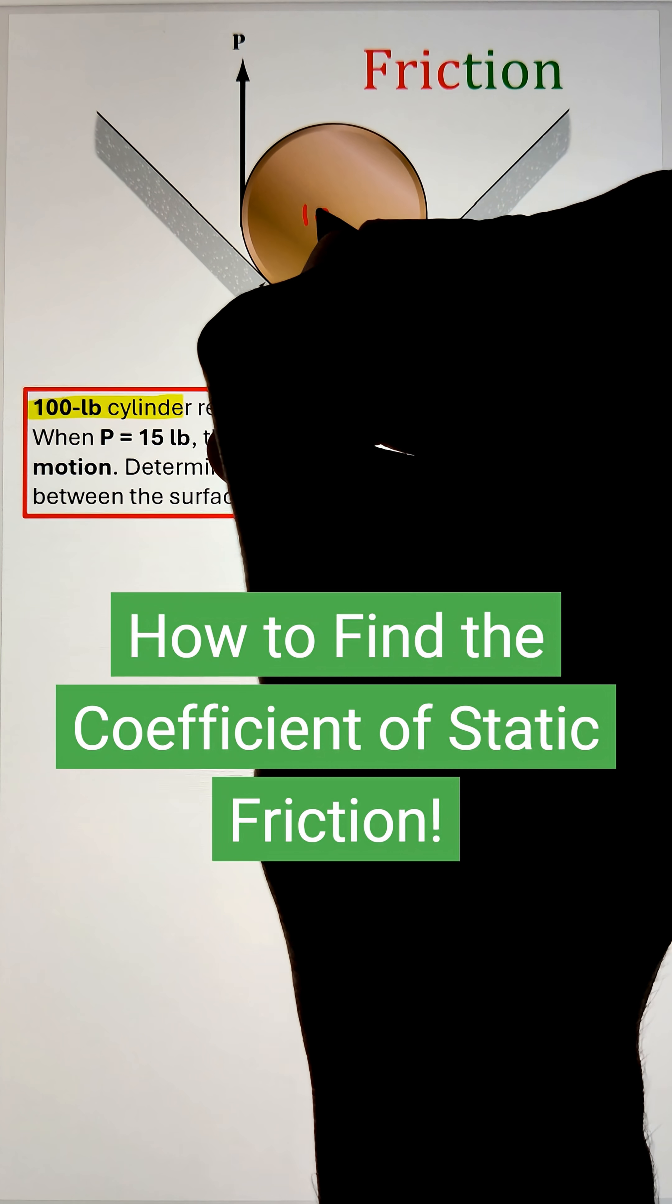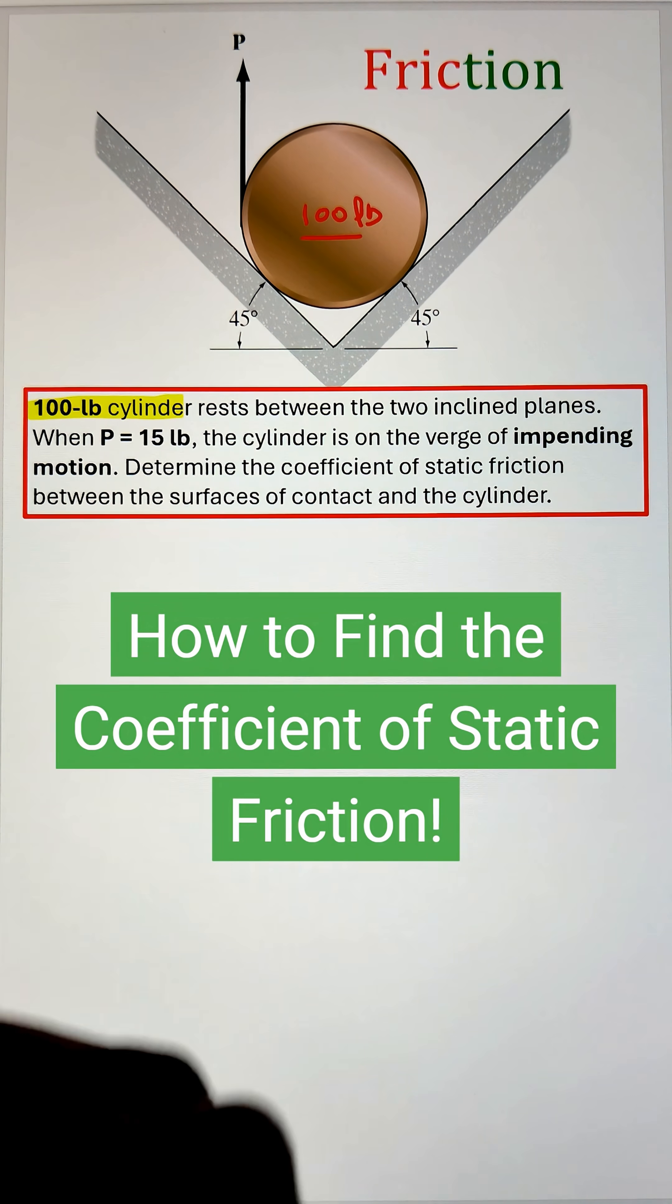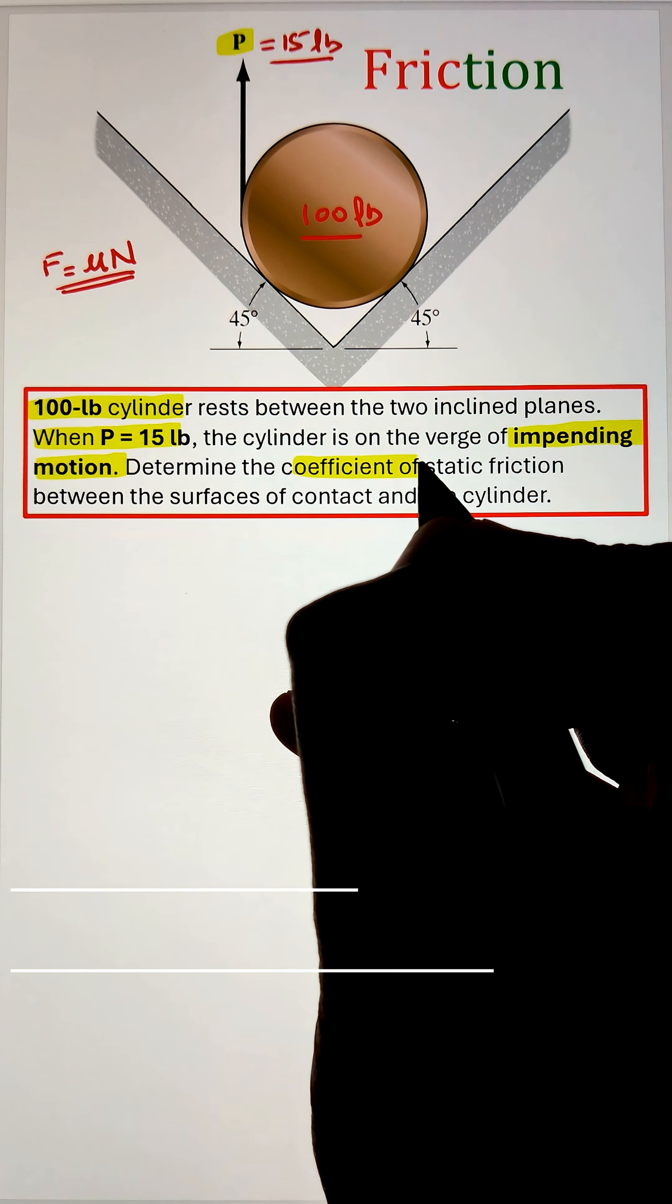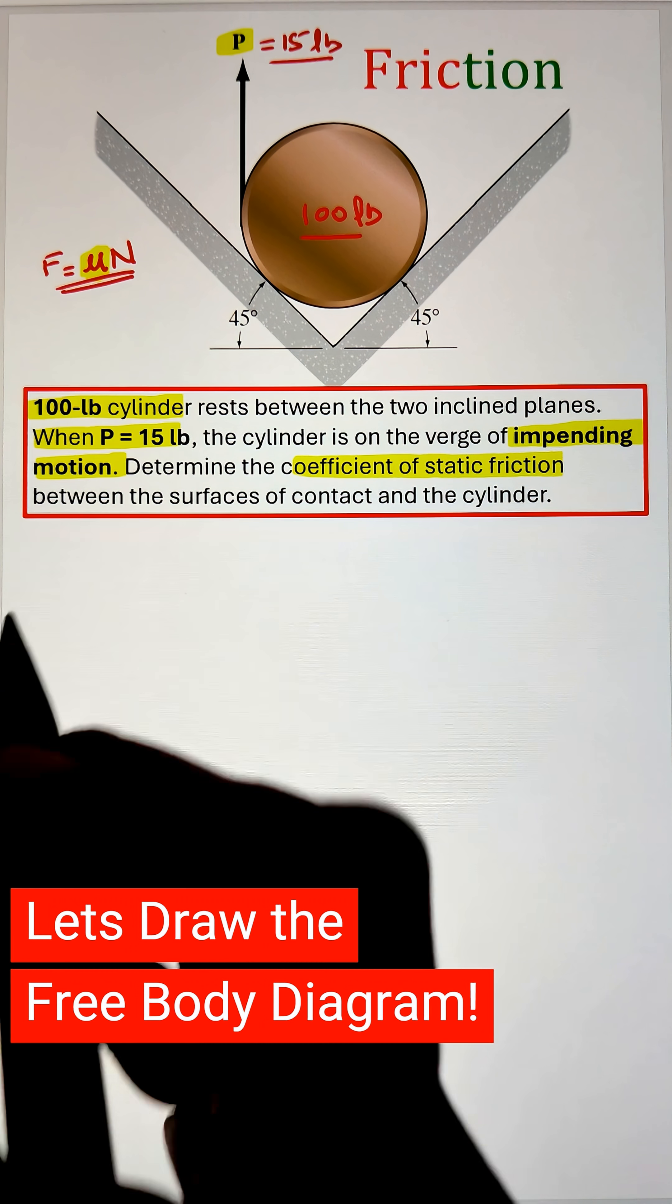If a 100 pound cylinder is between two inclined surfaces and a 15 pound load applied in the upward direction causes the cylinder to be on the verge of impending motion, in order to determine the coefficient of static friction we can start by first developing a free body diagram of the cylinder and listing down all the external loads and the support reactions that will be generated.